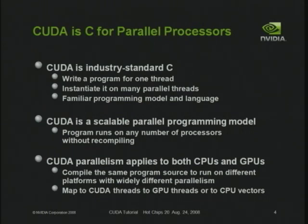So what is CUDA? CUDA is basically just C, growing more and more closer to C++ as we go along. It's C for parallel processors. We selected C because people are comfortable with it — they're familiar with it. We allow you to write an ordinary C program for one thread, then instantiate that one program on many parallel threads, giving you a familiar and comfortable environment to deal with all this parallelism.